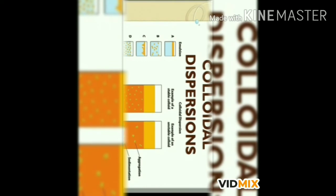A colloidal solution is one in which the size of solute particles is intermediate between those in true solutions and suspensions — bigger than true solution particles but smaller than suspension particles. Common examples are milk, gum solutions, blood, ink, and soap. The particle size is between 10⁻⁷ m and 10⁻⁹ m. Due to relatively small particle size compared to suspension, the mixture appears homogeneous, but a colloidal solution is actually heterogeneous. It consists of two phases: the dispersed phase (present in small proportions) and the dispersion medium (present in excess).